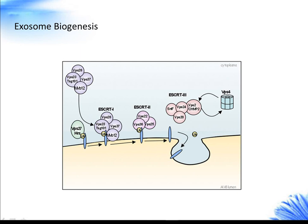They are formed inside the secreting cells in endosomal compartments, which is coordinated by the endosomal sorting complex required for transport (ESCRT). The ESCRT complex is composed of approximately 30 proteins that assemble into four complexes: ESCRT-0, ESCRT-I, ESCRT-II, and ESCRT-III.